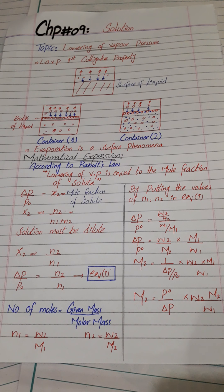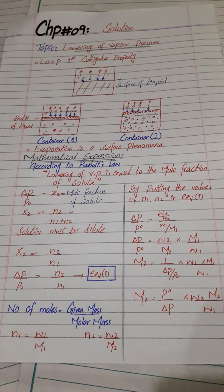My name is Lai Baabit. Today we are discussing chapter number 9 of Trustware Chemistry, which is named 'The Solution.' Today's topic is Lowering of Vapor Pressure. Lowering of Vapor Pressure is the first colligative property of solution.